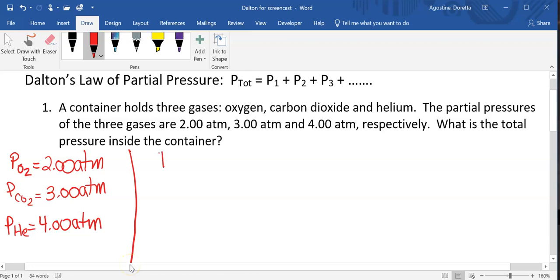So now our equation is P total equals the sum of the partial pressures. For this problem, that would be the pressure of the oxygen plus the pressure of the carbon dioxide plus the pressure of the helium. Plugging in the numbers, we have 2 atm plus 3 plus 4.